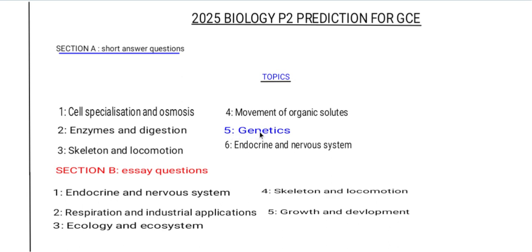The fifth topic is genetics, which I've highlighted in blue to indicate it is highly examinable — meaning it doesn't miss in an exam. Know the key terms used in genetics such as alleles, inheritance, phenotype, genotype, homozygous, dominant, and so on. Also know how to construct a genetic diagram and how to read a pedigree diagram.